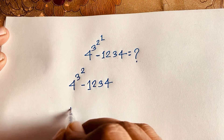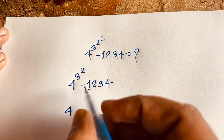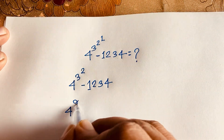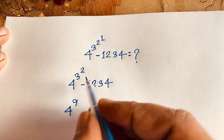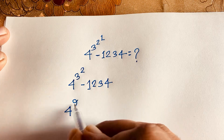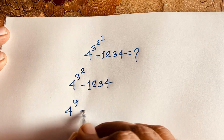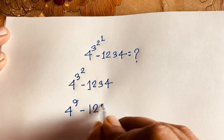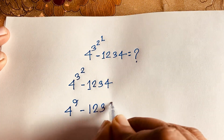Now I can see easily here is 4 to the power 3 to the power 2 — that will be 9, since 3 to the power 2 equals 9. So we have 4 to the power 9 minus 1234.